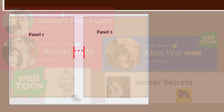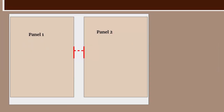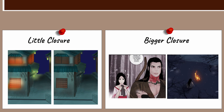First, we need to understand what closure is. The gap between panels contains information that the reader and the comic creator understand. In the first example, with little closure, it's easy to understand that the lights in that house have been turned off, and that it took less than a second once you pull the switch — you don't need every millisecond to understand that. In the second example, the closure is bigger, meaning more things happened between the first panel and the second one. The light indicates it's daytime, and several hours passed between those two panels, yet we don't need every little detail to know that. So now that we understand closure — a pretty basic concept — let's start with the categories.